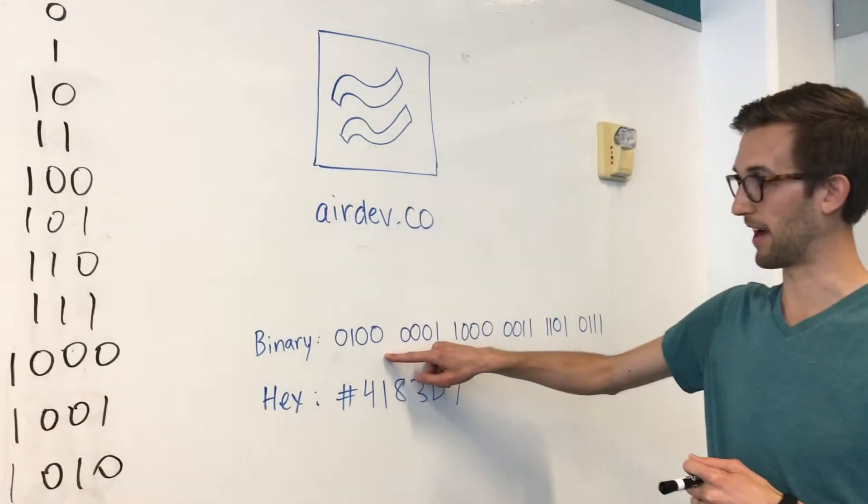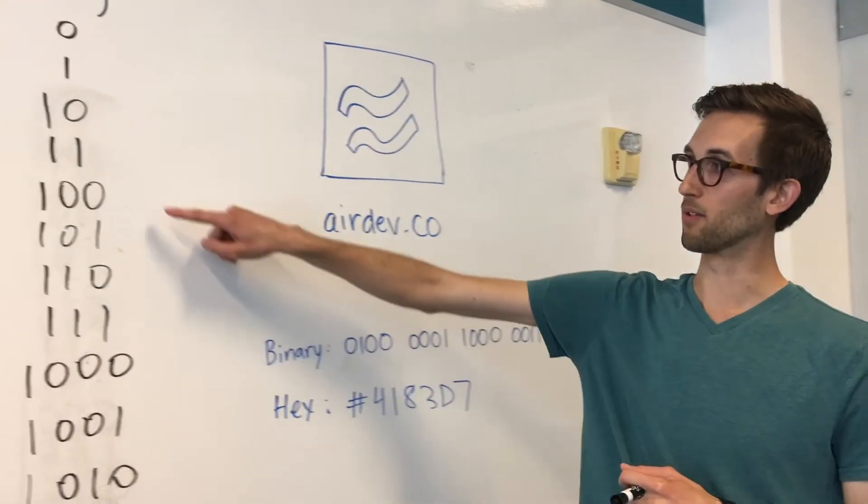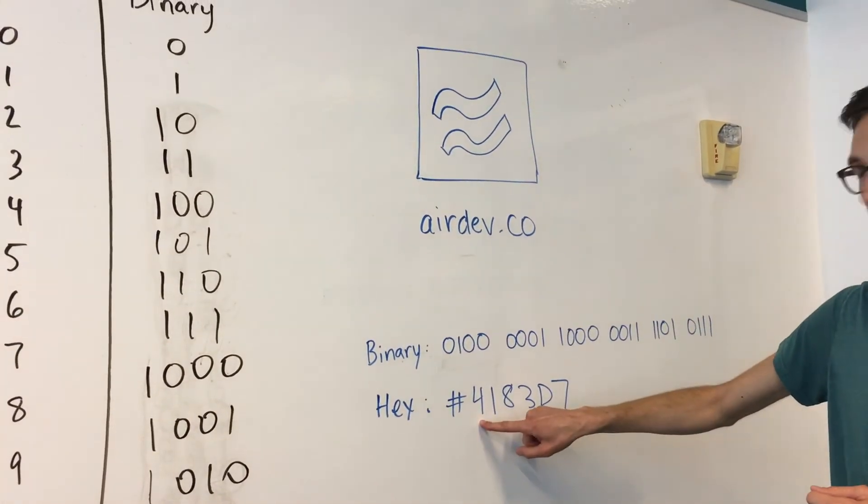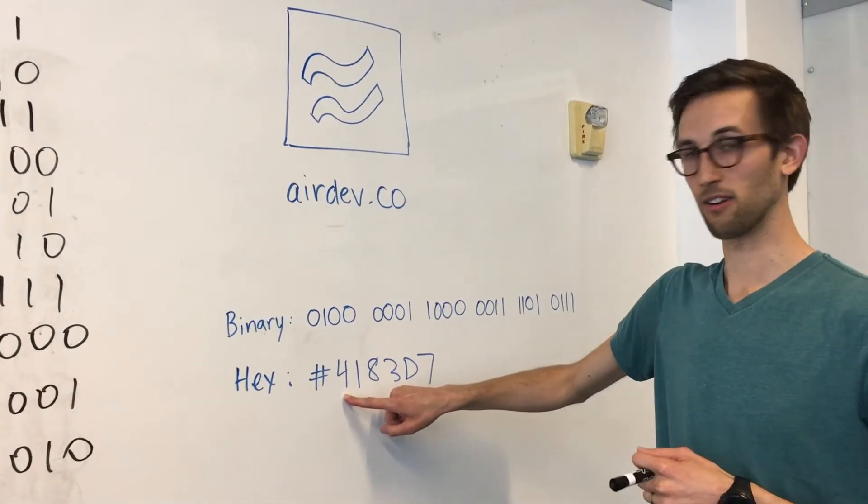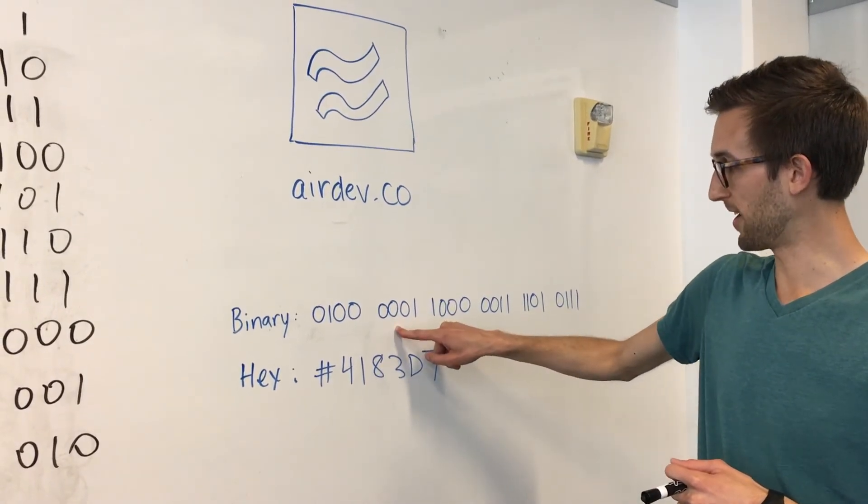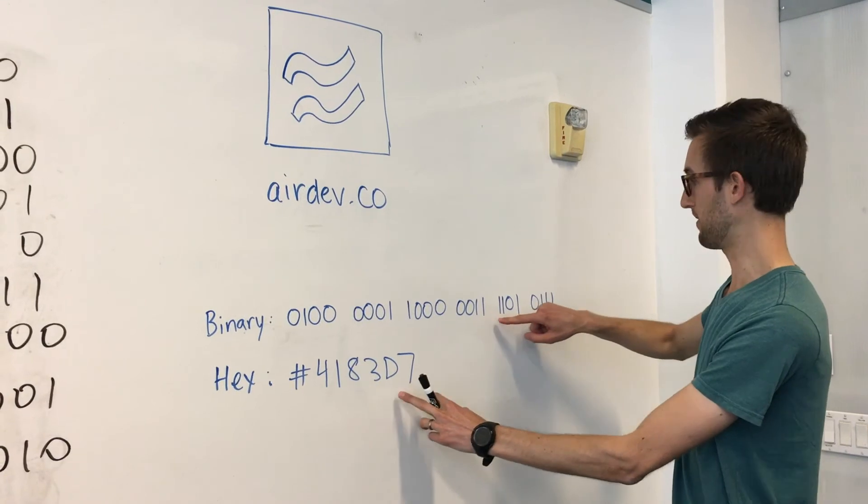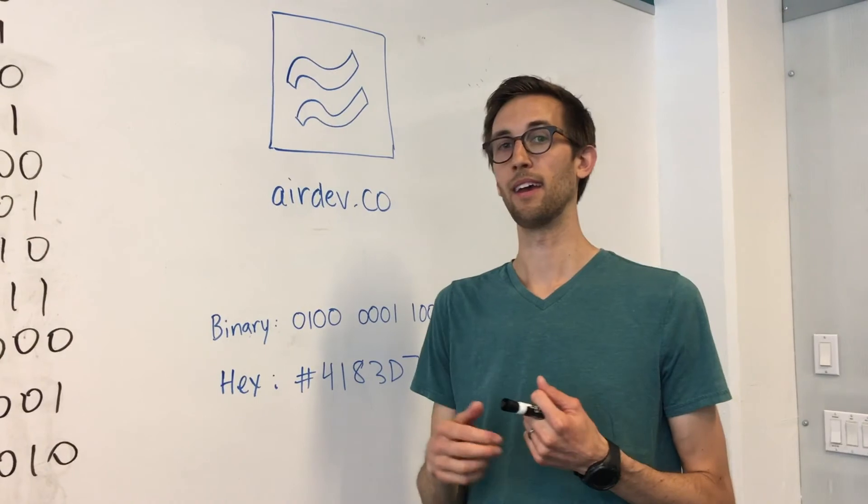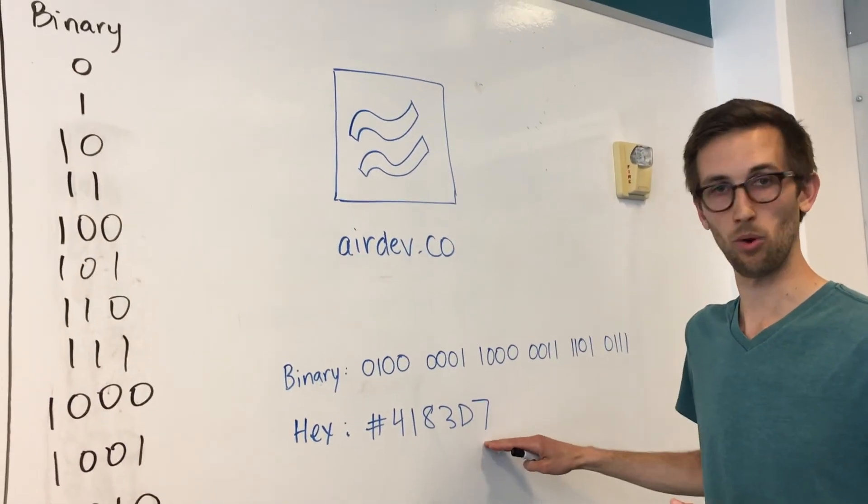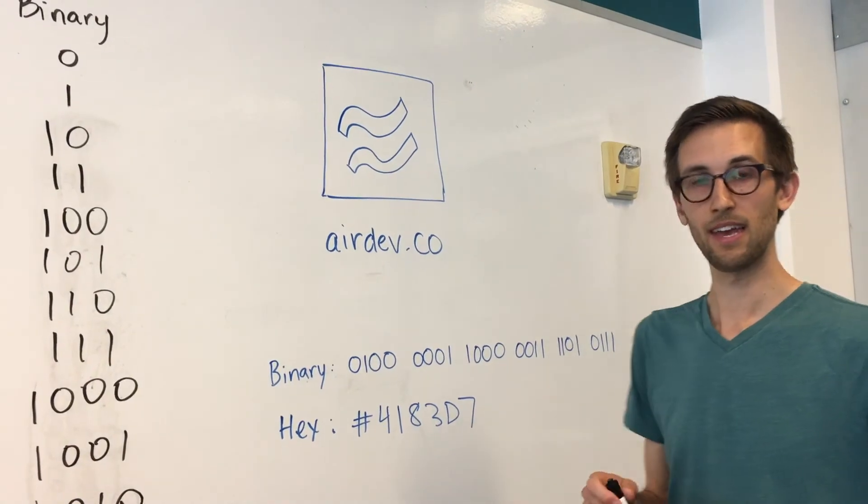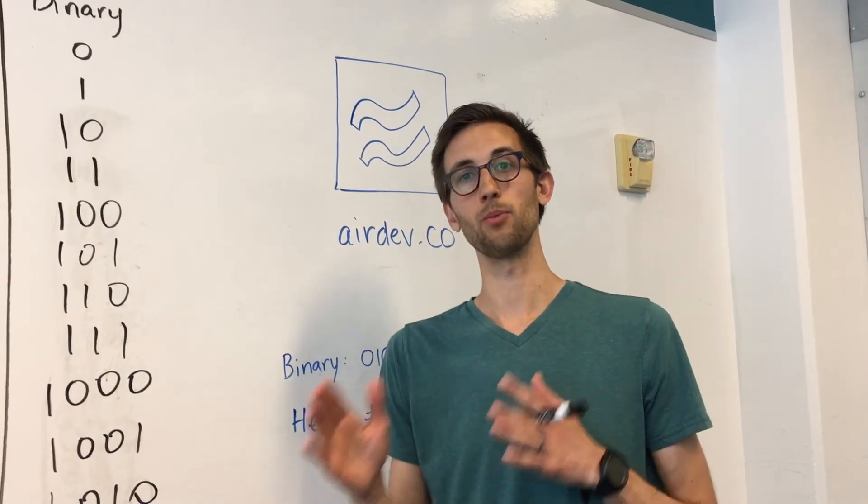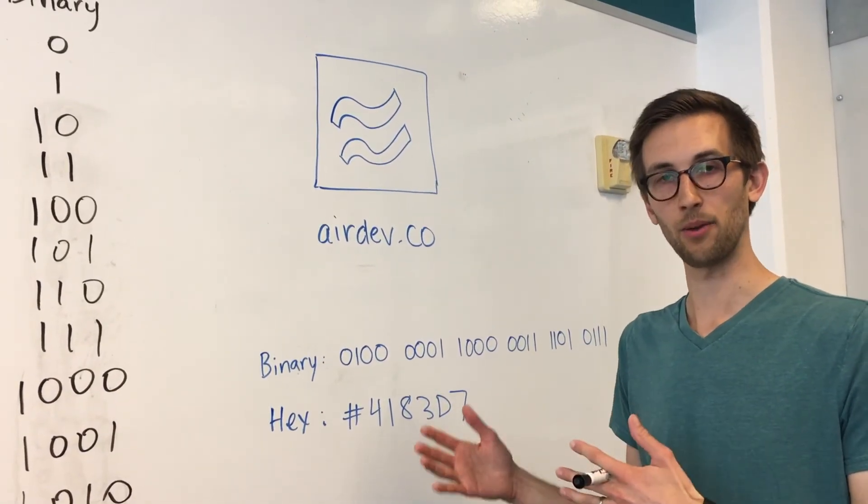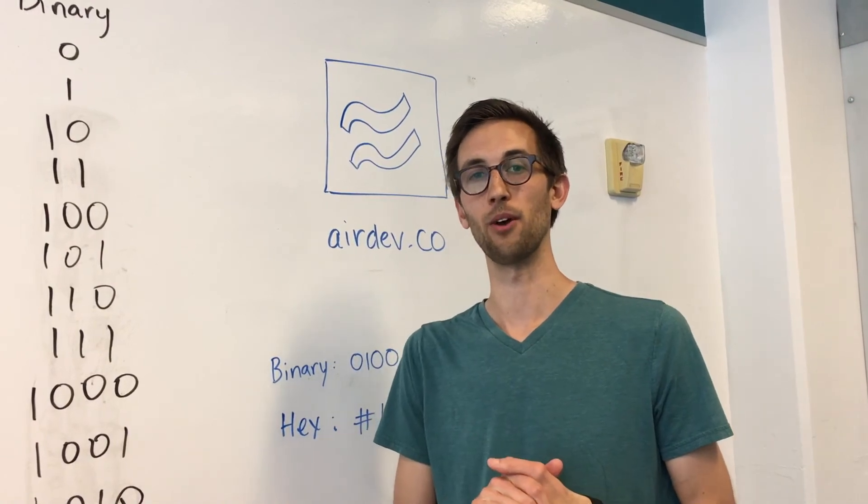So for example, the first part of my blue for Airdev is 0100. If we look that up over here, that corresponds to 4 in binary. The first digit in my color for Airdev is 4. This is 1, these 4 are 8, these 4 are 3, D, and 7. And so the hexadecimal system is an easy way to translate binary into something that we can work with and I can remember this color or at least try to. And it's a good way to interface between a computer and a human. And there are all sorts of other ways that we map from computer language to our language so that we can interface with the computers that we know and love.